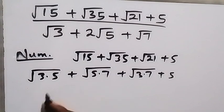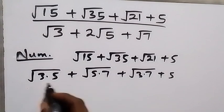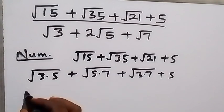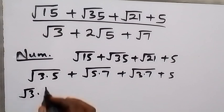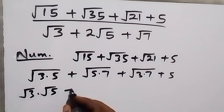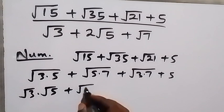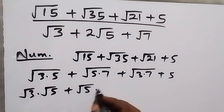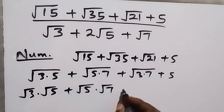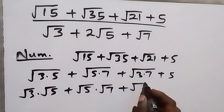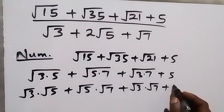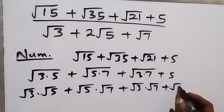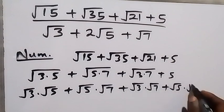From here we can separate the numbers inside the roots, and this will become √3 multiplied by √5, then plus √5 multiplied by √7, then plus √3 multiplied by √7, and then 5 can be written as √5 multiplied by √5.